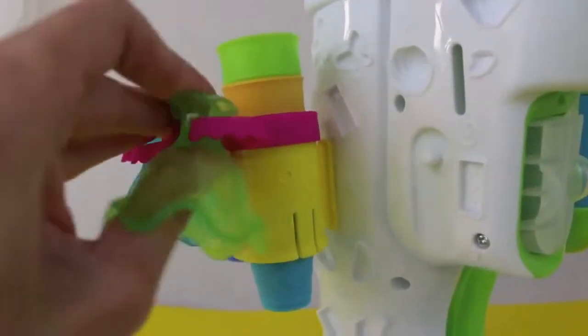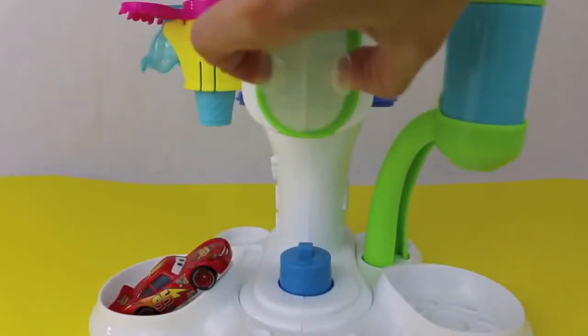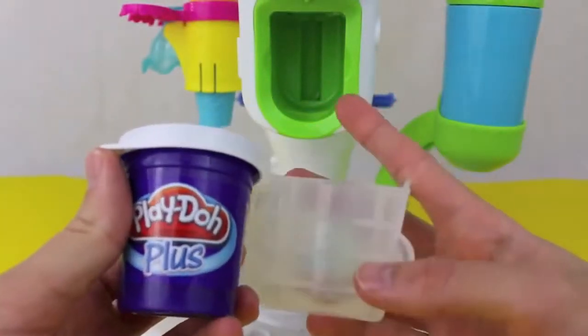We'll grab a cup from the side of the Play-Doh ice cream maker and then we have to load it with some Play-Doh Plus Play-Doh because that's softer and it's easier to squeeze.